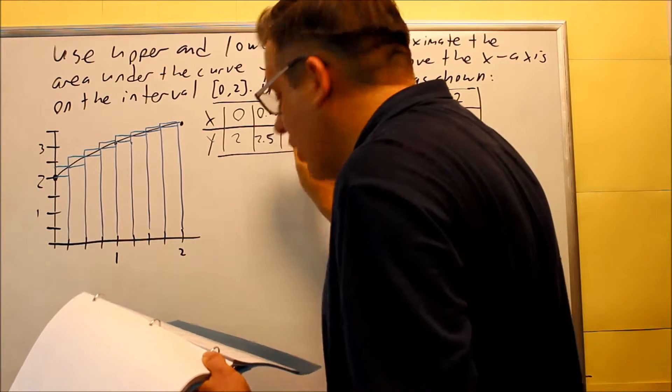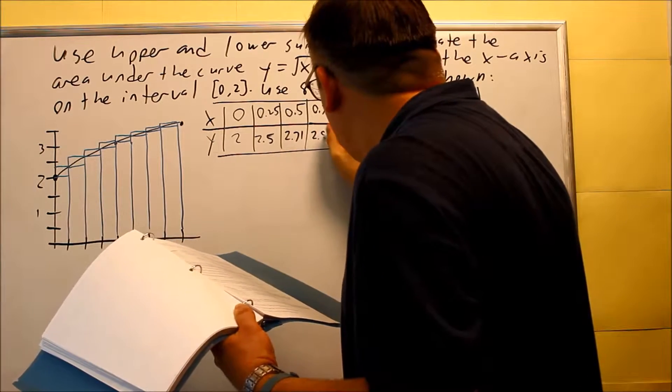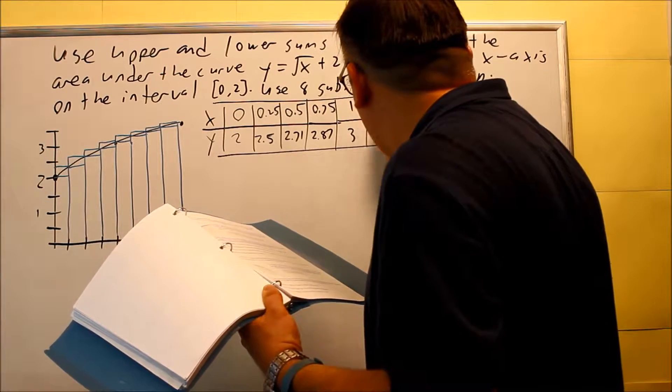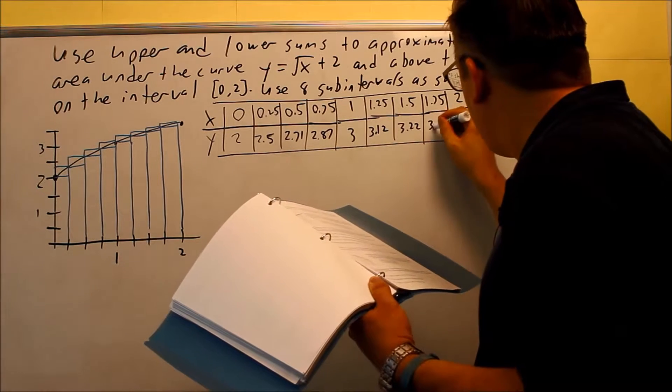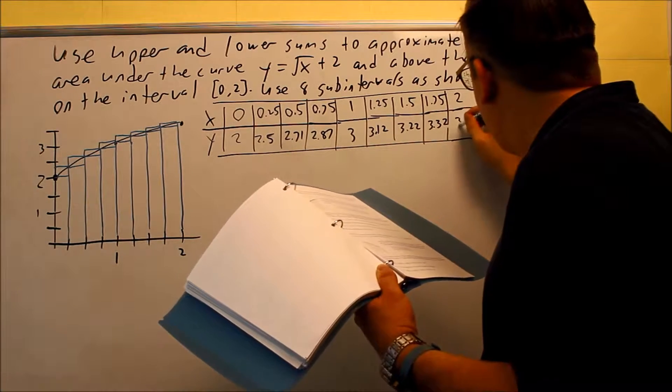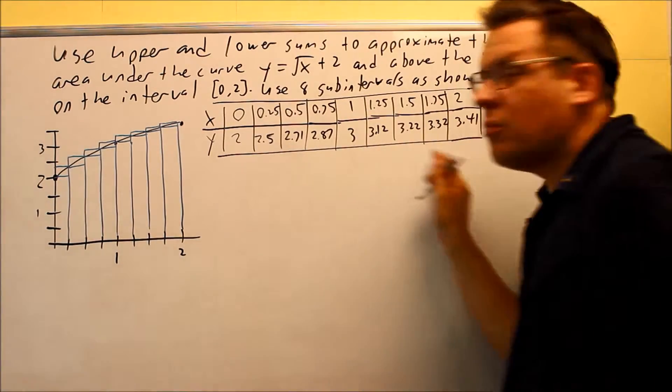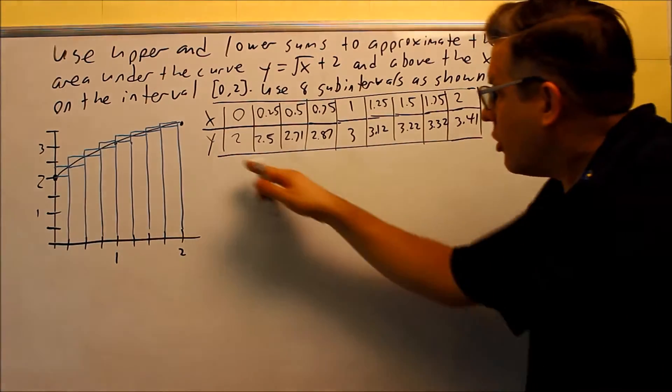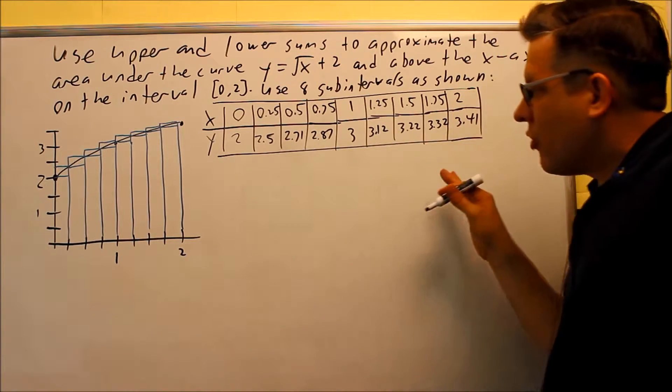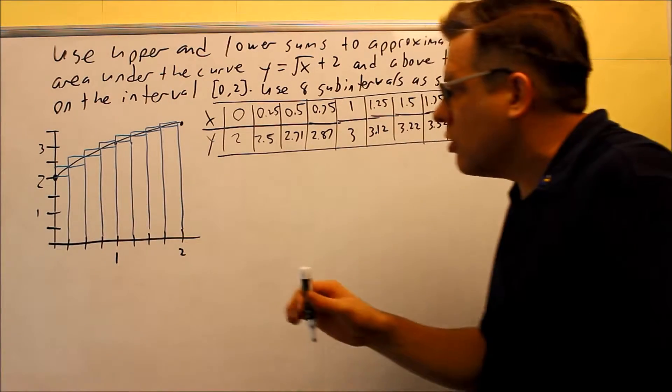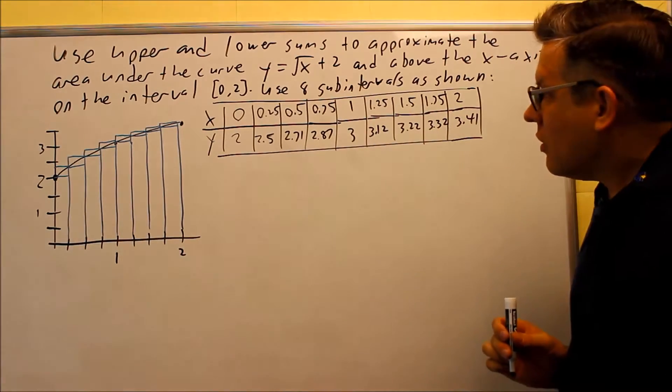I have these written down already, so let's go ahead and put those in: 2, 2.5, 2.71, 2.87, 3, 3.12, 3.22, 3.32, and then finally 3.41. So this is what you would get from your calculator. It's better to have this done first, because now we can just look at the picture and see what height corresponds to the value off of our table here.